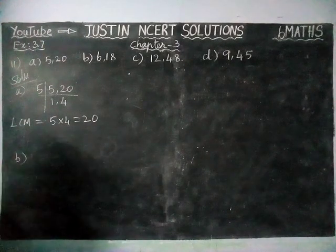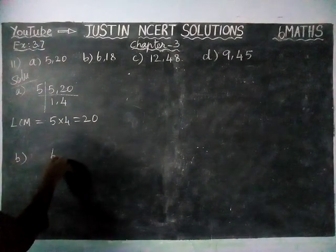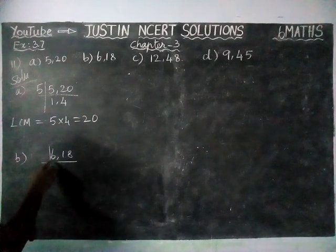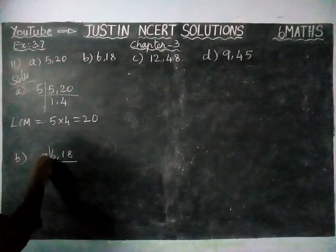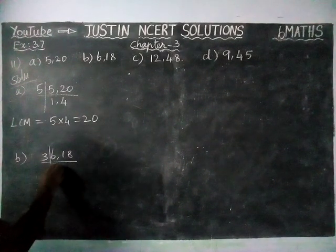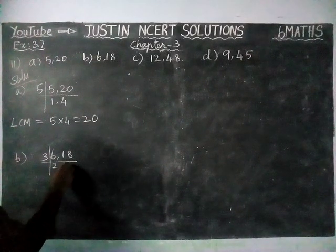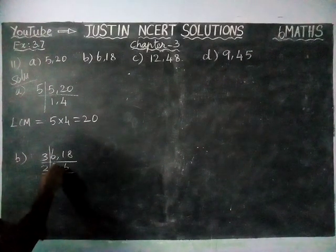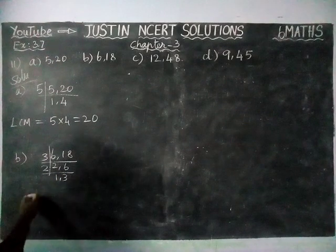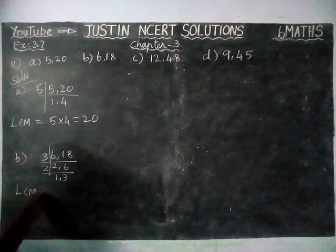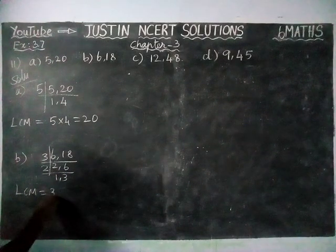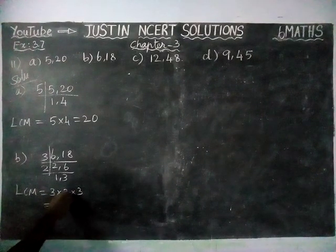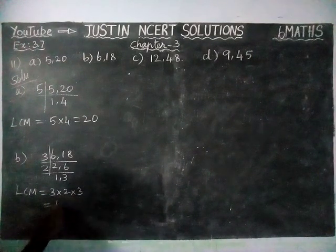Next, option B: 6, 18. We are going to divide it by common number 3. 2, 3 is 6. 6, 3 is 18. Now we are going to divide it by 2. 1, 2 is 2. 3, 2 is 6. LCM is equal to 3 into 2 into 3, is equal to 3, 2 is 6; 6, 3 is 18.